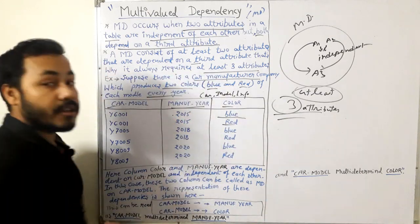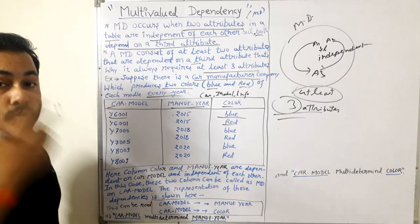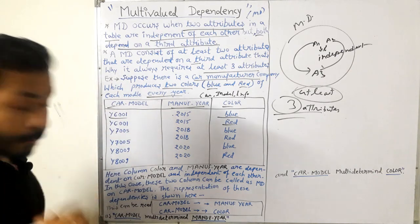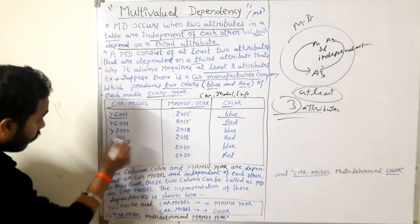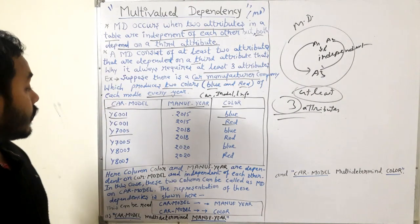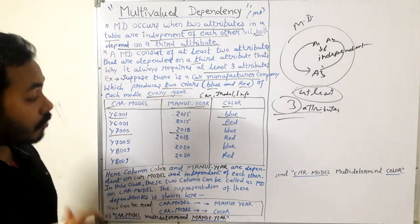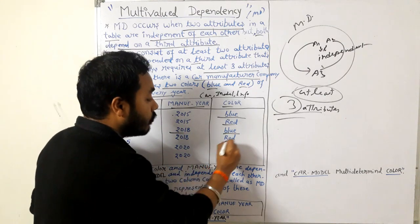There are two variants of color for model Y6001: blue and red. Then Y7005 is one more model produced in 2018, and there also we have two variants of color, blue and red.